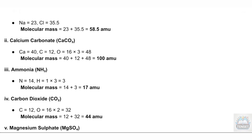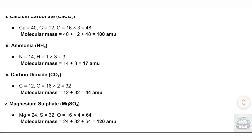III. Ammonia (NH₃): N = 14, H = 1 × 3 = 3. Molecular mass = 14 + 3 = 17 atomic mass units. IV. Carbon dioxide (CO₂): C = 12, O = 16 × 2 = 32. Molecular mass = 12 + 32 = 44 atomic mass units.